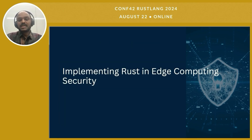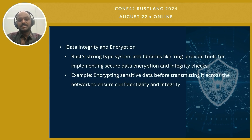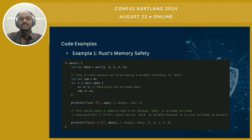Let's focus on how Rust can be implemented to enhance security in edge computing environments. Rust's type system and ownership model ensure that data transmitted over the network is handled safely and securely. For instance, Rust's TLS crate is commonly used to establish secure TLS connections, making it a reliable choice for secure network communication. Rust's strong type system and libraries like Ring provide robust tools for implementing secure data encryption and integrity checks — for example, encrypting sensitive data before transmitting it across the network ensures confidentiality and integrity. Rust's efficiency and lightweight runtime make it ideal for edge devices where resources are limited, and it can be used to develop firmware for IoT devices, ensuring secure and reliable operation.